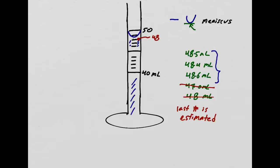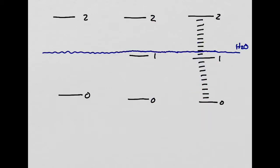Nice job. So we learned a lot today. When you go to lab and use different glassware, pay attention before you write down your number — ask yourself what kind of glassware you're using and how accurately you can write down these numbers. There's one more part I want to go over to make sure you're really good with sig figs. You can also look at how graduated a glassware is to see what the uncertainty of the device is.